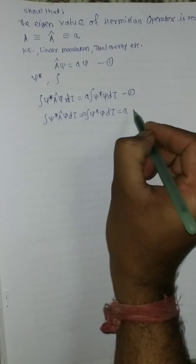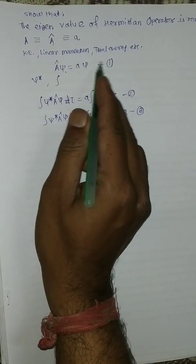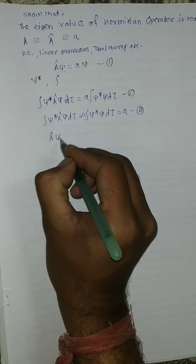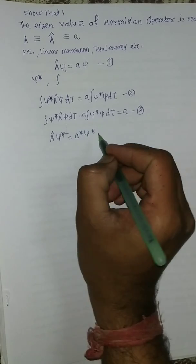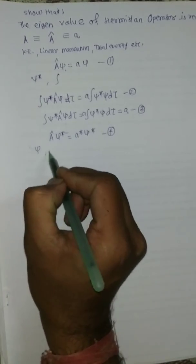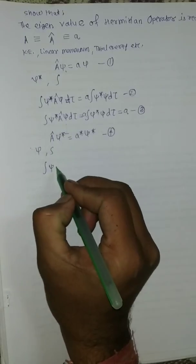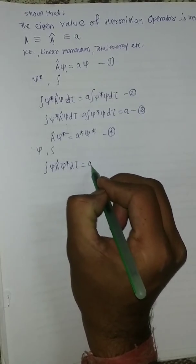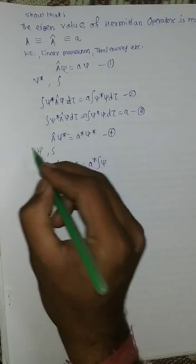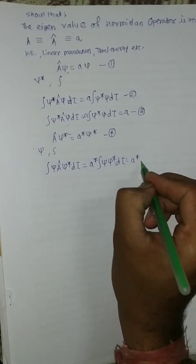Now we take the complex conjugate of equation number one. The complex conjugate gives: A-operator times ψ* equals A* times ψ*, where ψ* is the complex conjugate wave function and A* is the complex conjugate eigenvalue — this is equation number four. We then multiply by ψ and integrate on both sides: the integral of ψ times A-operator ψ* dτ equals A* times the integral of ψ ψ* dτ. This is equation number five.